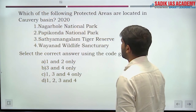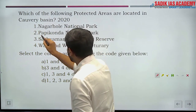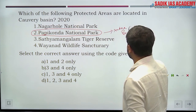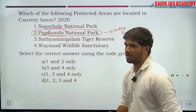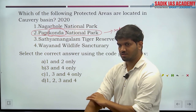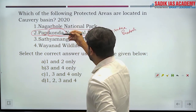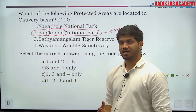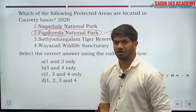Next question: which of the following protected areas are located in the Cauvery Basin? You only need to eliminate Papikonda National Park here, because it is situated in Andhra Pradesh. Names ending in 'Konda' generally belong to the Andhra Pradesh region. The others — Nagarhole, Satyamangalam, and Wayanad Wildlife Sanctuary — are all based in the Nilgiri Biosphere Reserve, which is the first Biosphere Reserve declared by UNESCO.